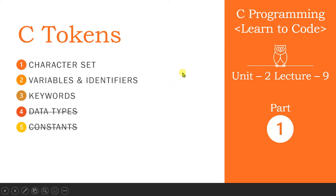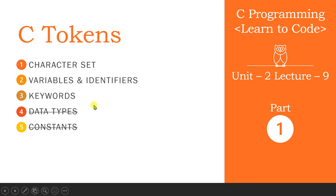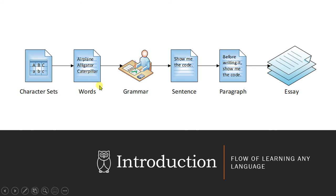Hello and welcome to the course on C programming, 'Learn to Code' series. This is the ninth lecture of Unit 2, and in this lecture we are going to discuss C tokens. Tokens are everything required to write an instruction in the program code. There are several tokens: character sets, variables and identifiers, keywords, data types, and constants. In this lecture we will cover the first three: character sets, variables and identifiers, and keywords.